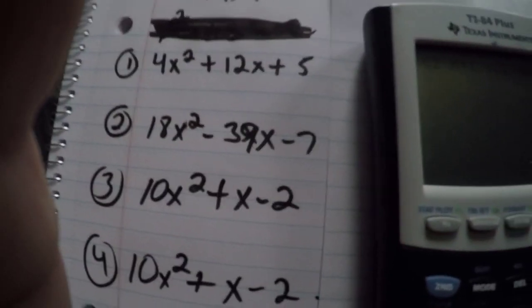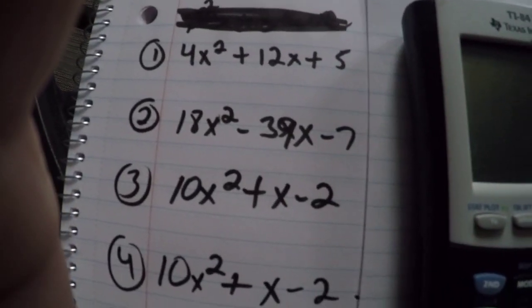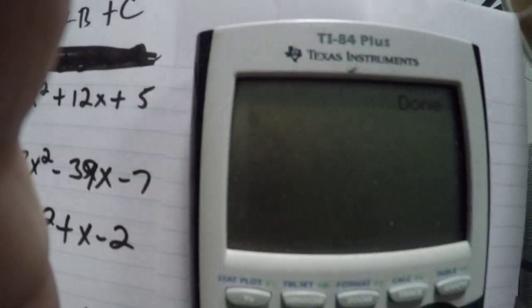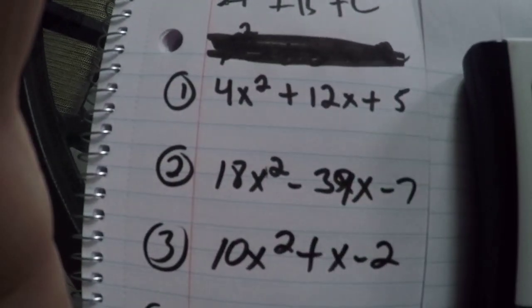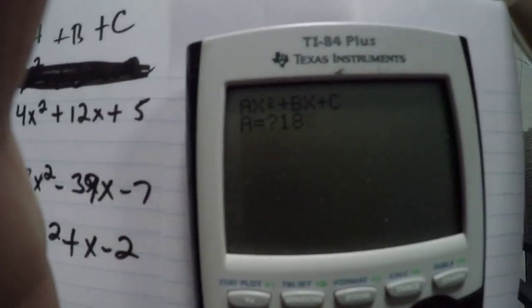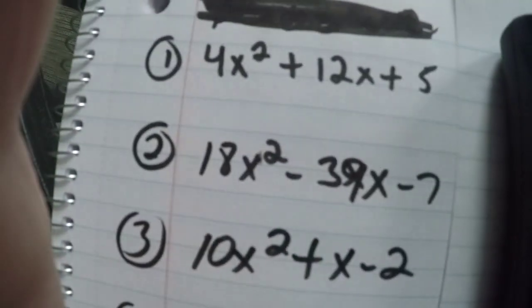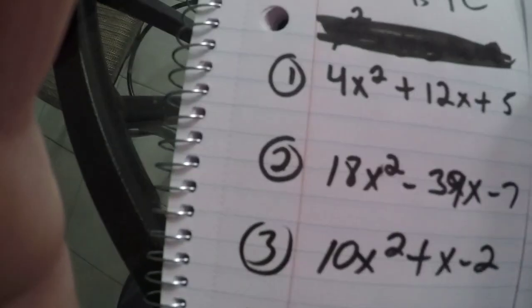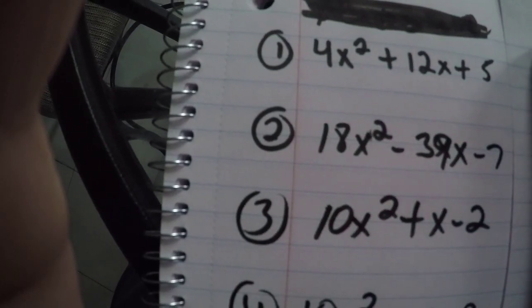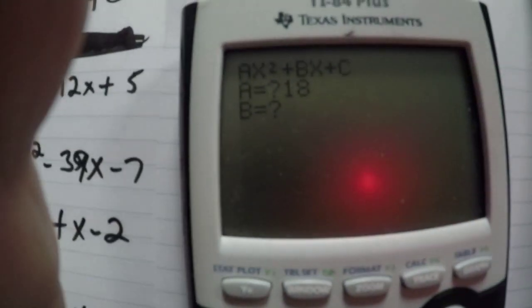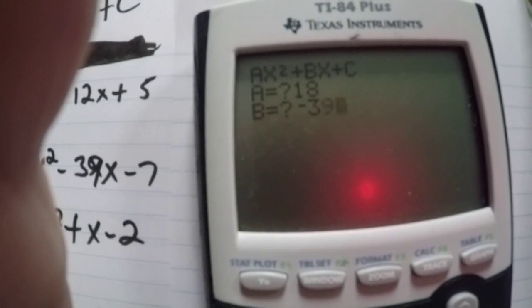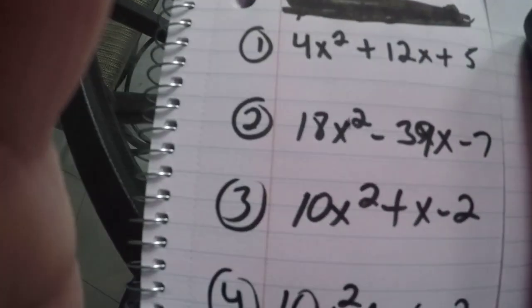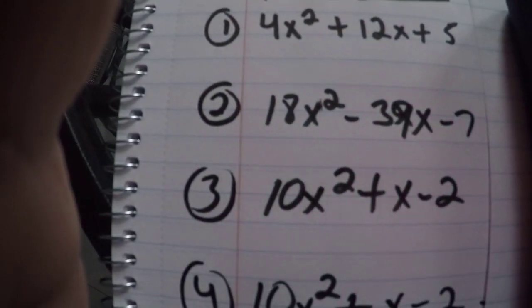So now I will go to the next one. Basically we hit enter. Enter again. It will come out. 18 is the first one. B will be minus 39. And the last one will be minus 7.